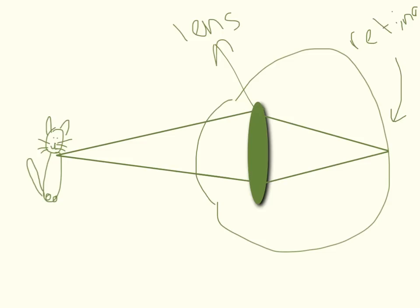So if we just recap really quickly the eye. This is the lens. You will notice it is a converging lens in the eye. And it focuses the light onto the retina which is at the back here.